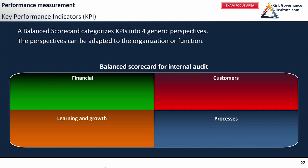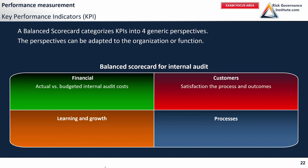Let's look at some examples. For financial, it could be actual versus budgeted internal audit costs. For customers, it could be satisfaction with the process and, more doubtfully, the outcomes of internal audits — you can't always expect audit clients to be happy with the outcome, but they can at least be happy with the process. One way of measuring this is to do a questionnaire to assess internal audit customer satisfaction with the process.